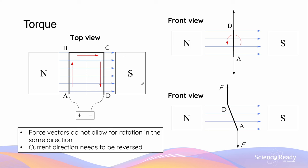Similarly, the force acting on side AB is still acting downwards because the current direction flowing through AB is still from A to B.